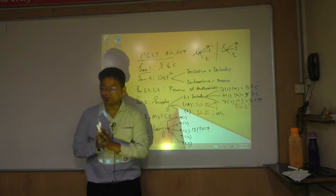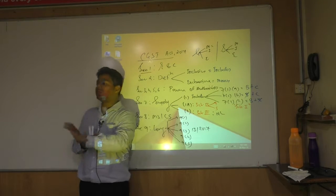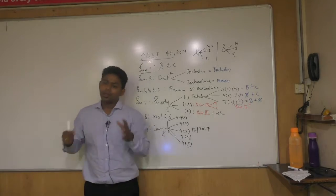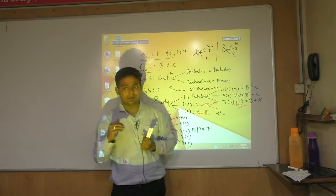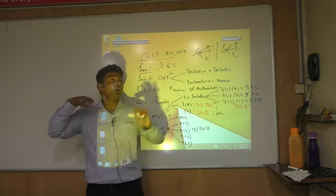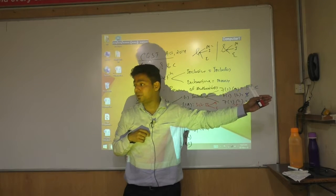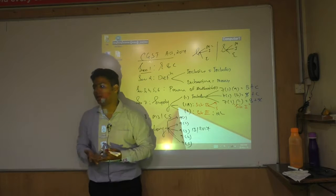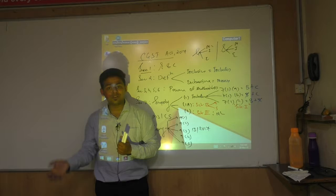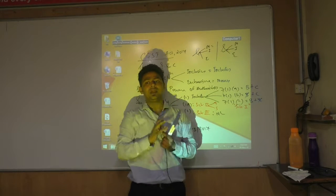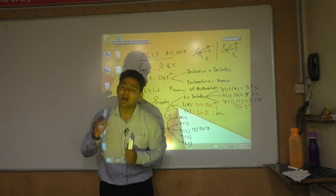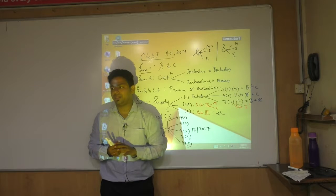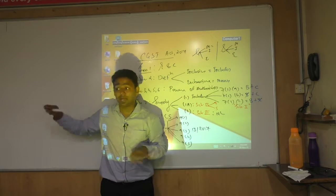Section 9.4 is about unregistered supplier supplying to registered entity. Earlier it had very wide scope, but the scope has now been narrowed. The latest language talks about any supply by an unregistered person to a specified category of person for specified goods and services. Since that notification has not yet come, technically 9.4 is not in effect. Section 9.5 is the third-party charge covering e-commerce operators, and it applies only to services — not goods. Only three services are covered.